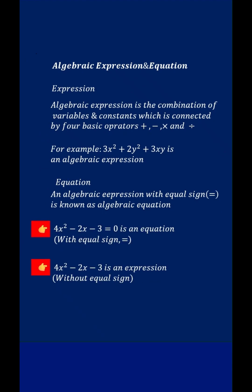For example, 4x square minus 2x minus 3 is equal to 0 is an equation with equal sign, and second is the expression. 4x square minus 2x minus 3 is an expression without equal sign.